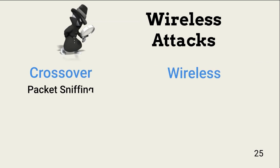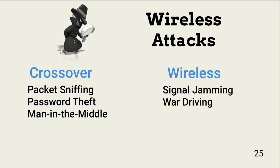Let's look at common attacks against wireless networks. Some attacks are also used against wired networks, including packet sniffing and password theft. Man-in-the-middle attacks are also possible on wired networks if the threat actor gains physical access, but are easier on wireless because no physical access is necessary. Attacks unique to wireless include signal jamming and war driving. In signal jamming, a threat actor uses tools and techniques to overwhelm an access point's ability to manage incoming and outgoing signals. This is illegal, but jamming tools are available online and easy to implement.